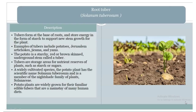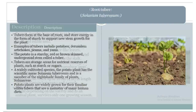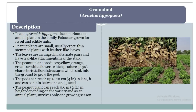Groundnut (Arachis hypogaea), also known as peanut, is an herbaceous annual plant in the family Fabaceae, grown for its oil and edible nuts. Peanut plants are small, usually erect, thin-stemmed plants with feather-like leaves arranged in alternate pairs with leaf-like stipules near the stalk. The peanut plant produces yellow, orange, cream, or white flowers, which produce the characteristic floral structure that pegs into the ground to grow the pod. The pods can reach up to 10 cm in length and can contain between 1 and 5 seeds. The peanut plant can reach 0.6 m in height and is an annual plant that survives only one growing season.